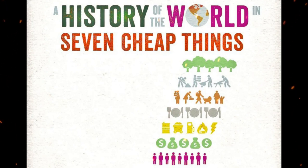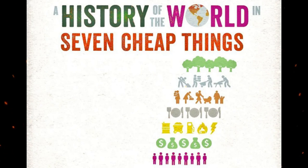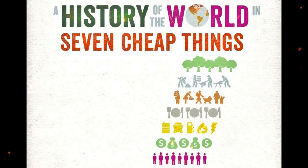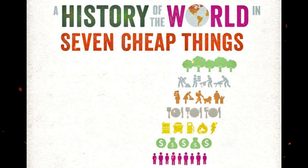Finally, the McNugget costs lives — not just chickens' lives and sometimes workers' lives, but the lives and livelihoods of indigenous people cleared from land needed to grow chicken feed. These are cheap lives. The McNugget illustrates how the seven cheap things make one another possible.